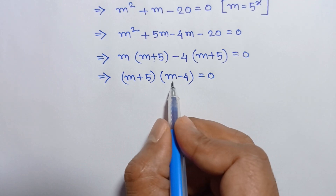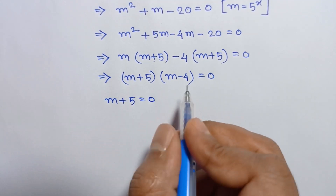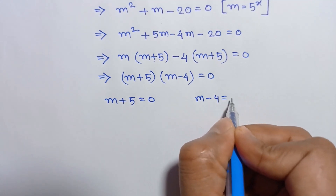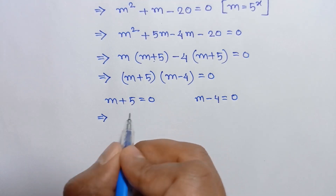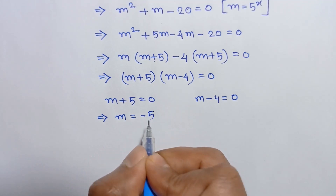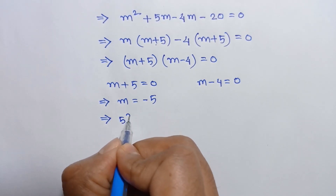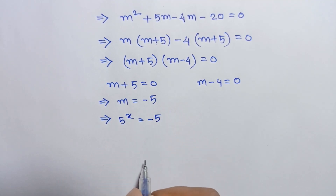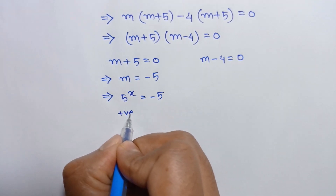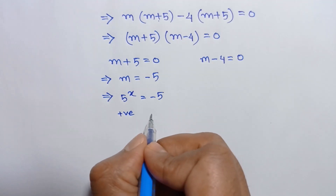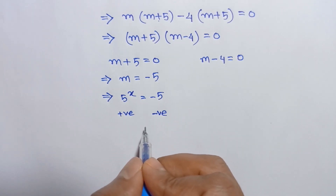So we will have m plus 5 is equal to 0, or m minus 4 is equal to 0. Taking 5 to the right side we have m is equal to negative 5. Substituting the value of m, we get 5 to the power x is equal to negative 5. Now the power of a positive number is always positive, and negative 5 is always negative, so the left side and right side will never be equal — there is no real solution.